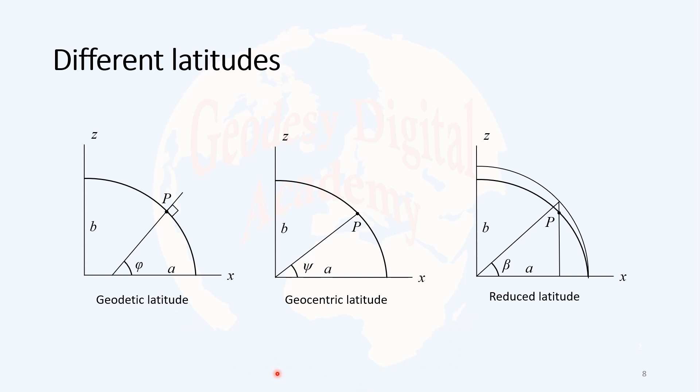Now consider that I draw a line from the surface or from the point P to the center of the ellipse or ellipsoid. This angle is called geocentric latitude. Note that the geocentric latitude is not defined based on normal to the ellipse, but based on the geocentric distance.